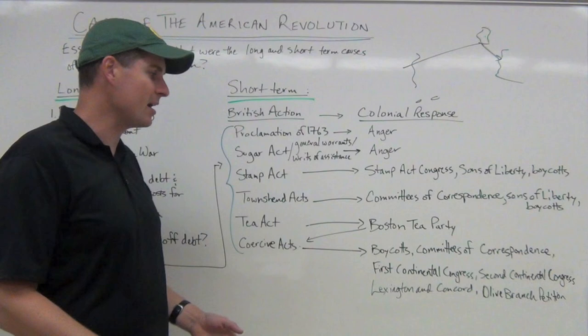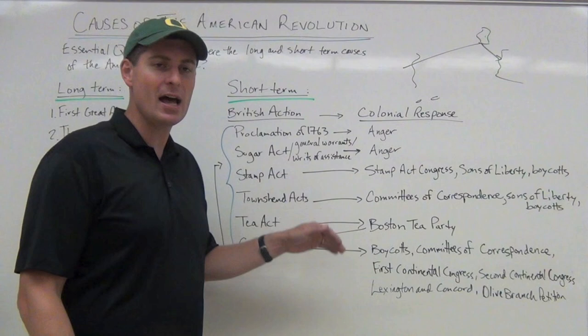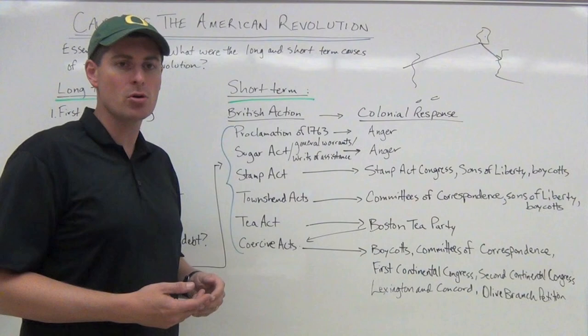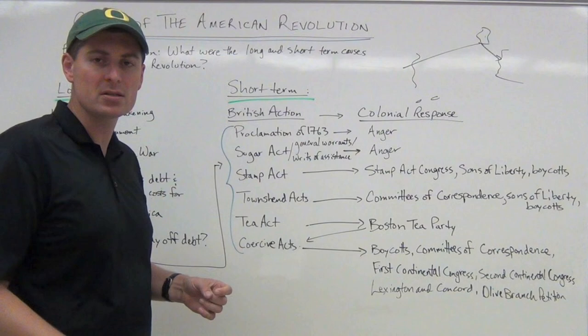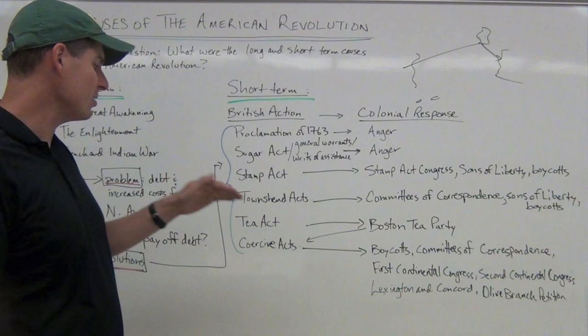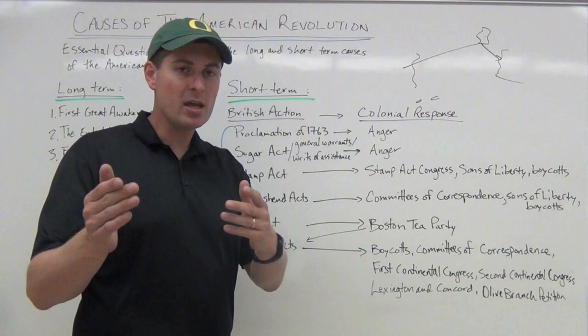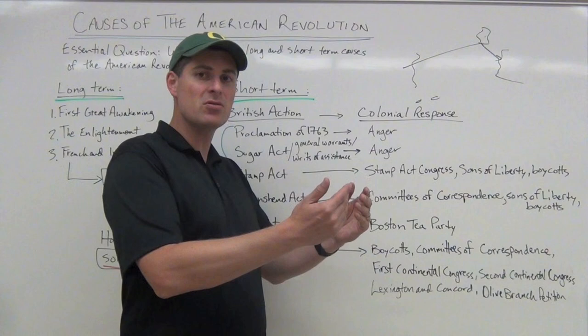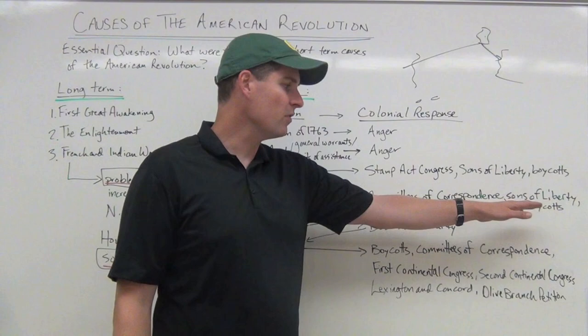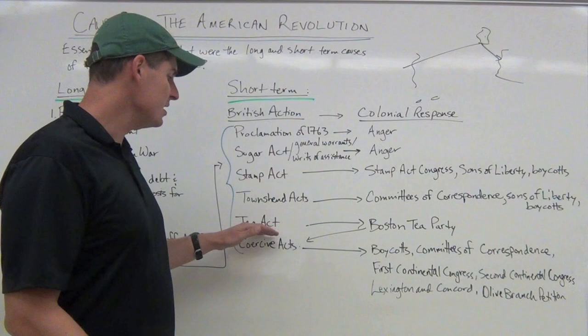Two years later, the Townshend Act — another attempt, but instead of a direct tax visible at purchase, this was an offshore tax placed before goods came ashore on raw materials such as glass, tea, and other products. The Stamp Act, Townshend Act, and Tea Act were all about generating new revenue to pay down the debt from the French-Indian War. The Townshend Act resulted in the forming of committees of correspondence — bad for the British because it created permanent inter-colony communication about problems with the British, making an us-versus-them mentality more entrenched. Sons of Liberty and boycotts re-emerged, forcing the British to pull off the Townshend Acts.